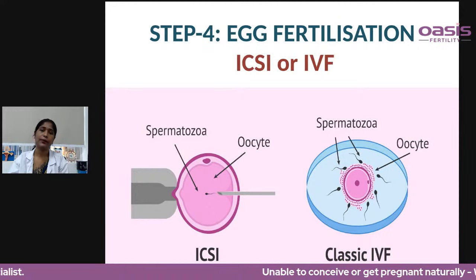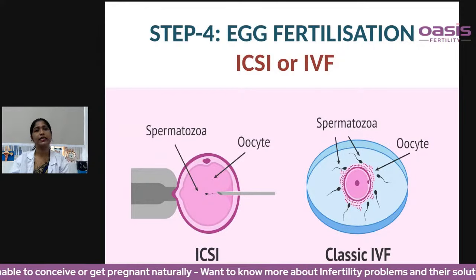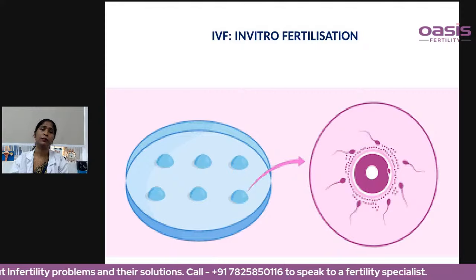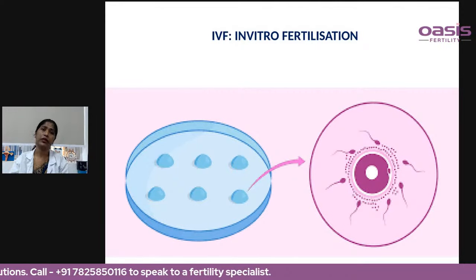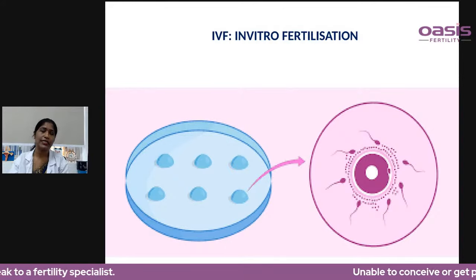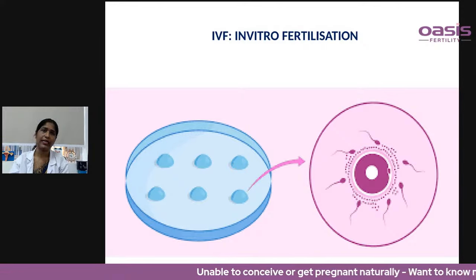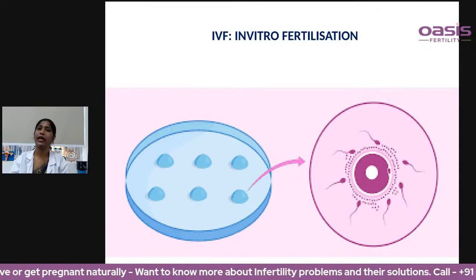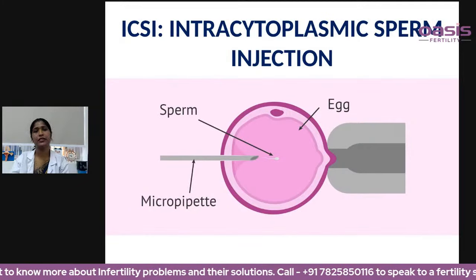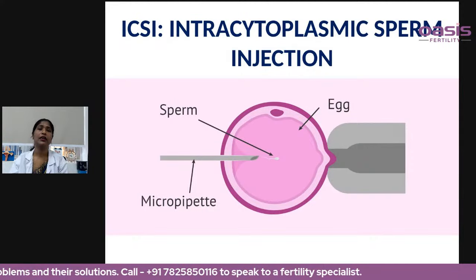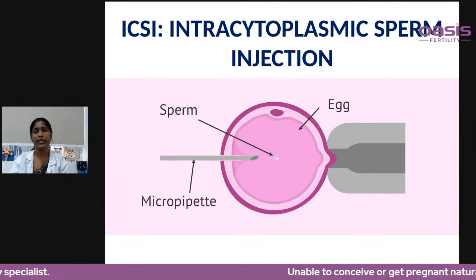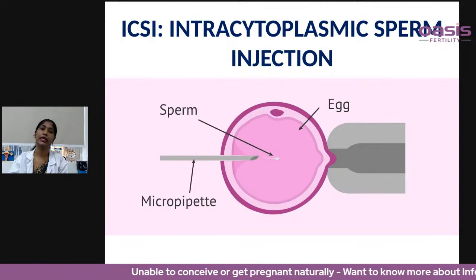Step four is fertilization. There are two ways: classic IVF and ICSI (intracytoplasmic sperm injection). In classic IVF, each egg is placed with a number of sperms and the best sperm self-selects and fertilizes the egg. In ICSI, the embryologist manually selects the best-looking sperm and directly injects it into the egg to achieve fertilization.